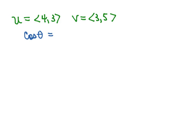So remember that the cosine of theta is equal to u dot v over the magnitude of u times the magnitude of v.